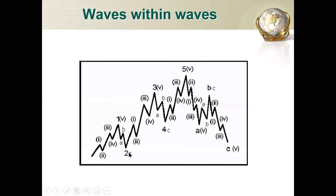Within a bigger trend, you also have smaller trends, each following the same 1, 2, 3, 4, 5, A, B, C structure. The smaller 1-2-3-4-5-ABC completes the first sub-wave, then another 1-2-3-4-5-ABC completes the second sub-wave, then a third. So within each major impulsive wave, you have a complete smaller Elliott Wave cycle.